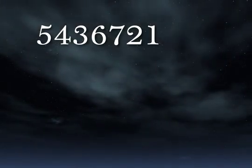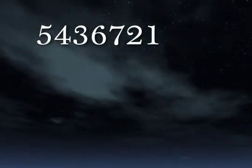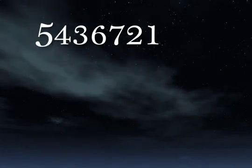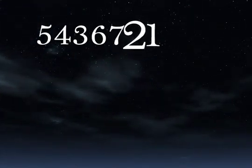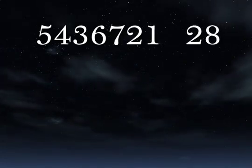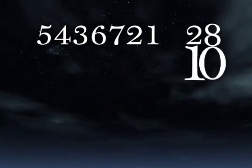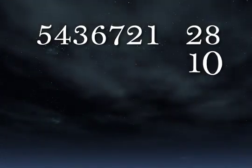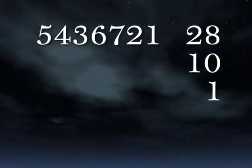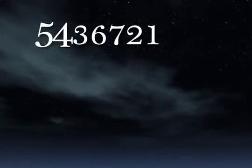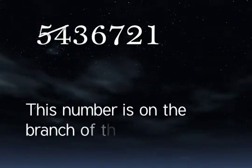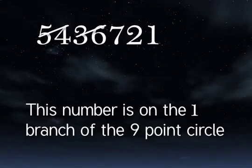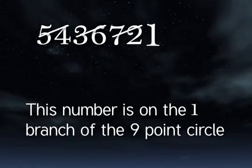Let's digit sum this number the long way. 5 plus 4 plus 3 plus 6 plus 7 plus 2 plus 1 is 28. 2 plus 8 is 10. 1 plus 0 is 1. Or just cast out the 9s. 5 and 4 is 9, cross them out. 3 and 6 is 9, cross them out. 7 and 2 is 9, cross them out. And you're left with 1.